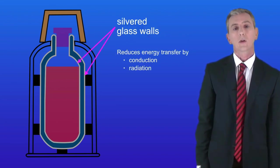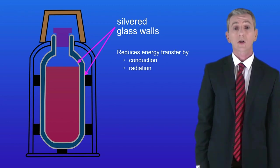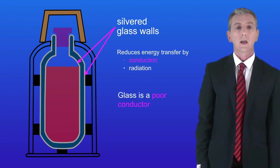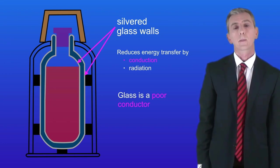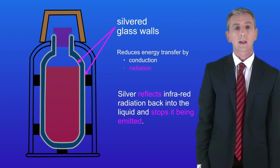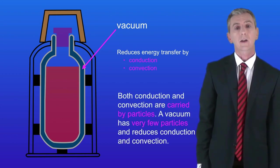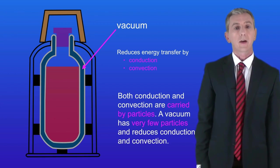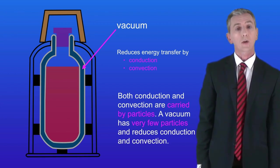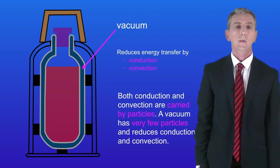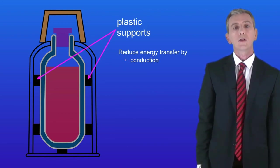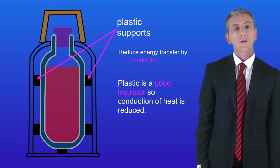Let's look now at the silvered glass walls. These reduce energy transfer by conduction and radiation. Glass is a poor conductor so that reduces heat transfer by conduction. Silver reflects infrared radiation back into the liquid and stops it being emitted. Between the layers of glass is a vacuum. This prevents both conduction and convection because both of these processes require particles. In a vacuum there are very few particles so that reduces both conduction and convection. Finally, the plastic supports reduce energy transfer by conduction, as plastic is a good insulator.